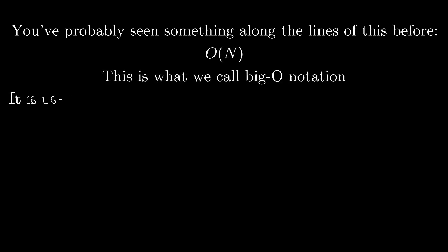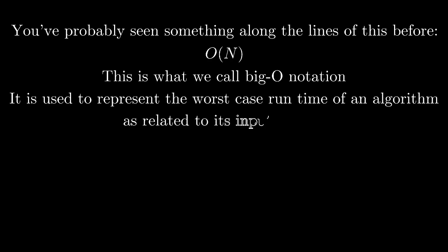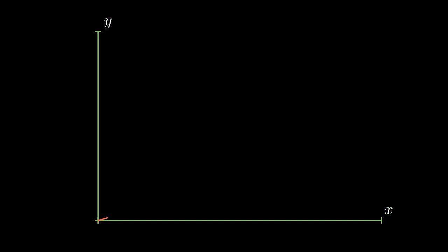You may have seen the notation of big O before. This is what we call big O notation. It's used to represent the worst case runtime of an algorithm as related to its input size n. If we have something that's big O of n, we say that runs in linear time, or that there is a linear relationship between the running time of the algorithm and the input size n. This is a pretty fast runtime because your program is only increasing linearly.